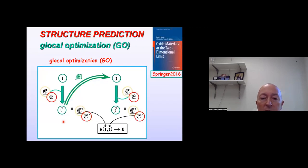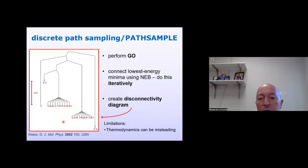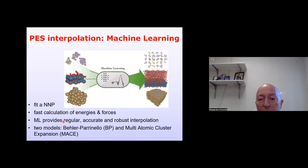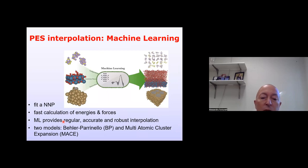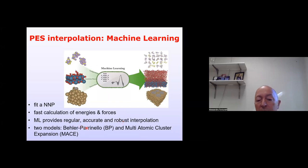We have global optimization tools, path sampling codes and approaches, and we are combining everything with machine learning. Machine learning works simply to fit a neural network potential — an interpolation of the potential energy surface calculated at a higher level like DFT — and we want fast calculation of energy and forces. Machine learning provides a regular, accurate, and robust interpolation of the potential energy surface. In particular, we have used two machine learning force fields: Behler-Parrinello, one of the first proposed, and the latest one.